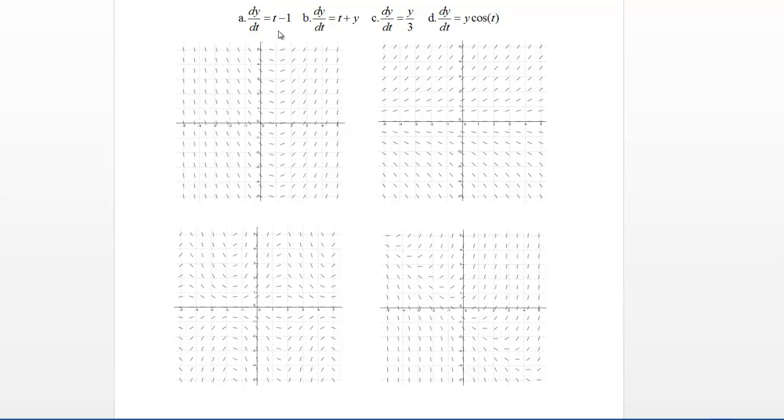A is dy/dt equals t minus 1, B is dy/dt equals t plus y, C is dy/dt equals y over 3, and D is dy/dt equals y times cosine t.